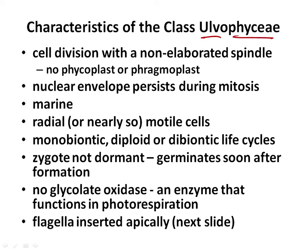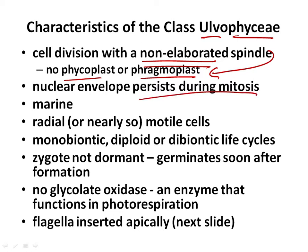There is a non-elaborated spindle — no phycoplast or phragmoplast. The phycoplast was those extra microtubules parallel to the new cell plate. The phragmoplast were microtubules perpendicular to the new cell plate, or parallel to the spindle in cases where there's an elaborated spindle. So cell division in the Ulvophyceae: non-elaborated spindle, which means no phycoplast or phragmoplast. The nuclear envelope, however, still does persist during mitosis — the nuclei stay close together.